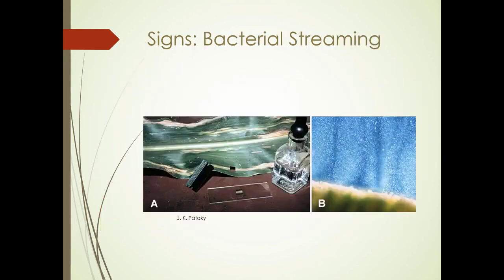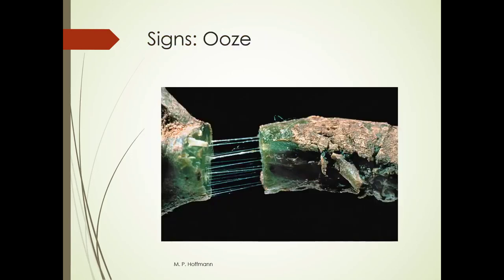Stewart's wilt is a disease you'll see on corn. If you take a section of a corn leaf that has symptoms and drop it in water on a microscope slide, you'll see bacterial streaming — this is with a compound microscope and it's Erwinia stewardii. You may also see bacterial wilt in cucumbers and that group of plants, where sticky strands of bacterial ooze become evident as you cut the stem and pull it apart. This is also caused by Erwinia.